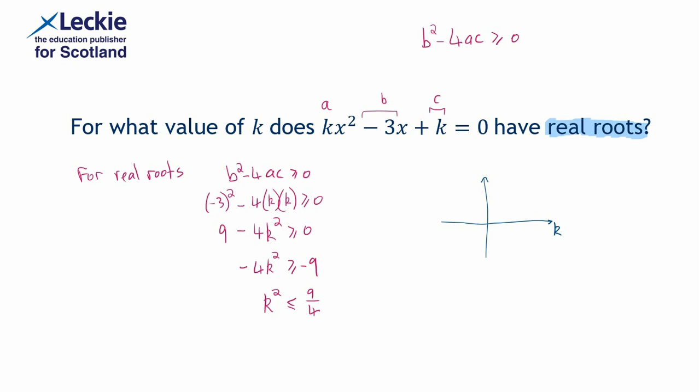And so what we want to do is think, what would the graph of y equals k squared look like? So if we were to draw the graph of y equals k squared, well it is just a classic parabola that crosses or touches at the origin. So y equals k squared looks like this.